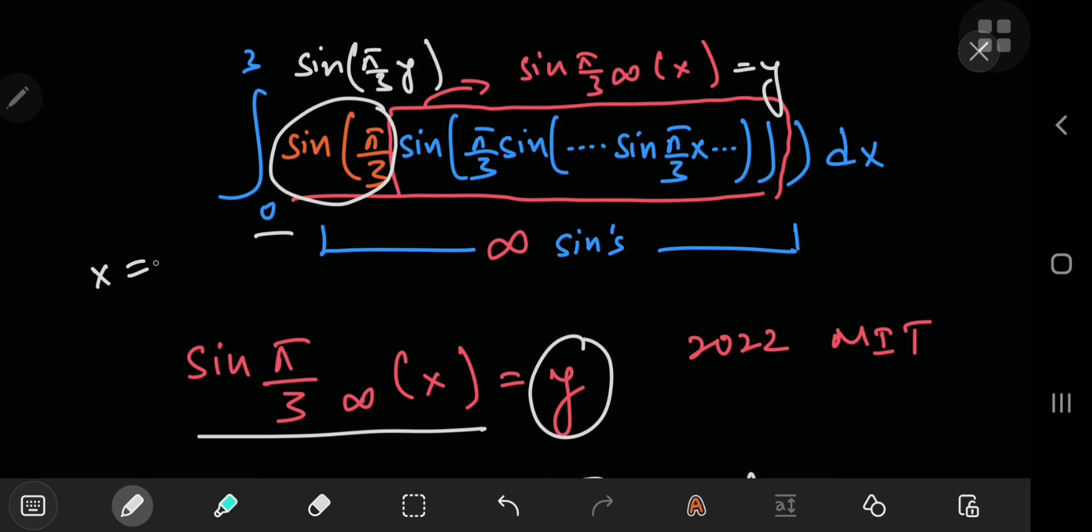So we're not exactly plugging x equals zero anywhere. We're actually just letting x approach zero from the right, that is, we're letting x approach zero from values greater than zero. So yeah, that's why y is not equal to zero in this case.